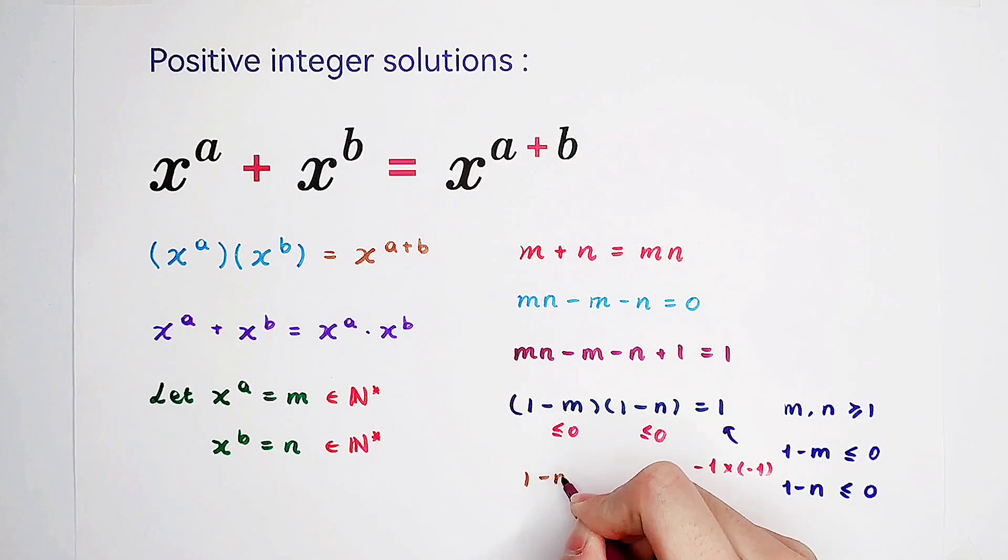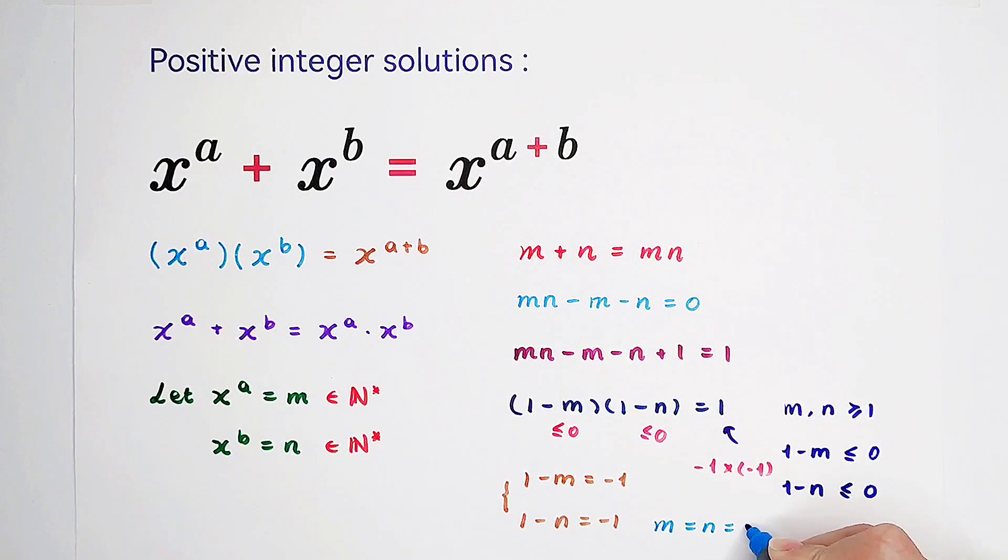So we get 1 minus m equals negative 1, 1 minus n equals negative 1. So then, m is equal to n is equal to 2.